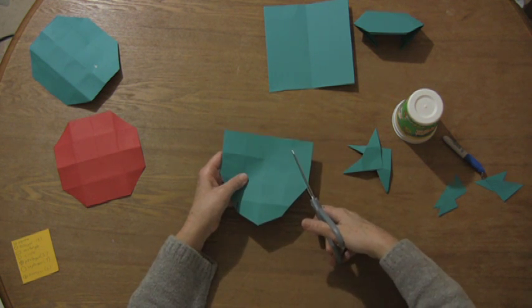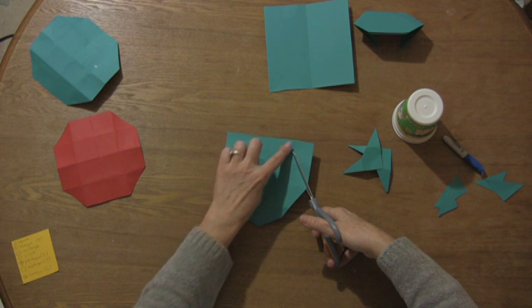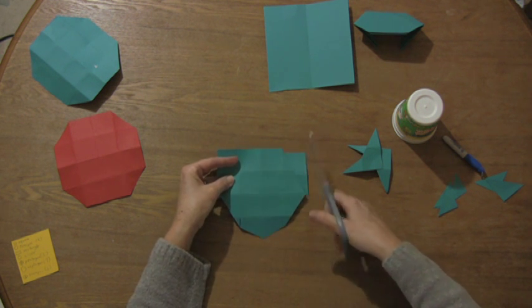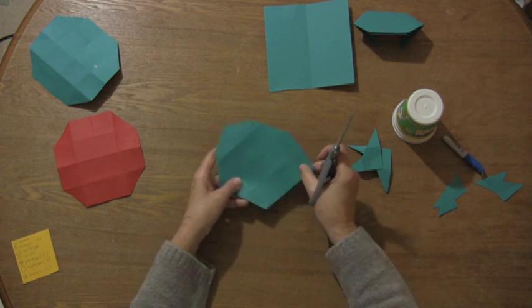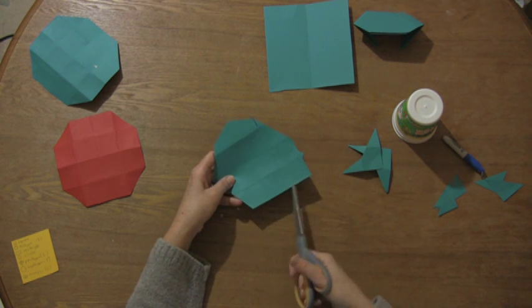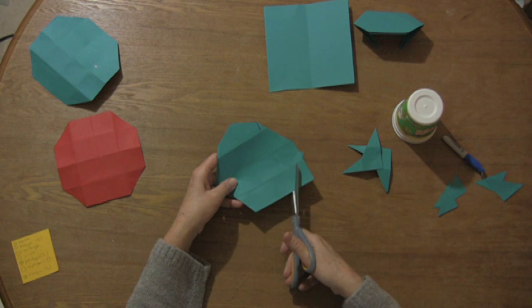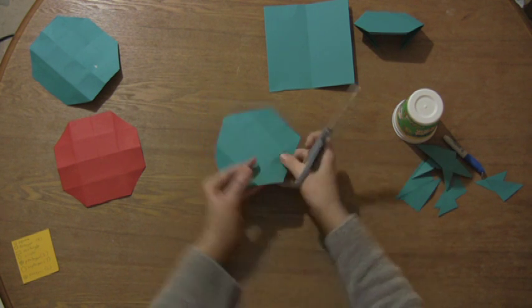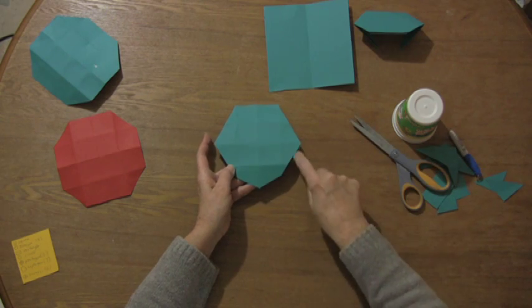And then I'm going to bring the middle point all the way down to the first corner there. Like that. And then these two are going to stay. I'm going to take from the bottom here and bring them up to that middle point. And that would give you your seven-sided.